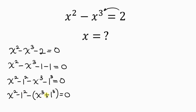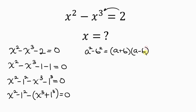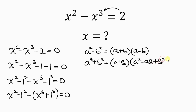Notice that we have the property of difference of two squares, and also the property of the sum of two cubes. For difference of two squares, a squared minus b squared can be expressed as (a plus b)(a minus b). For the sum of two cubes, a cubed plus b cubed equals (a plus b)(a squared minus ab plus b squared).